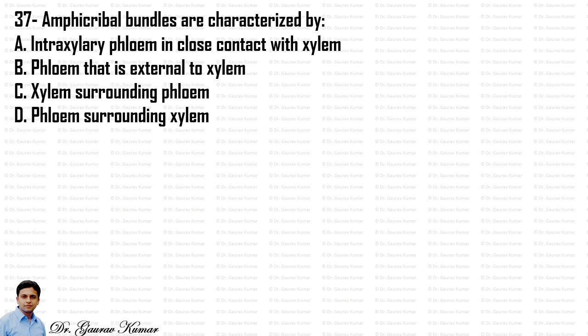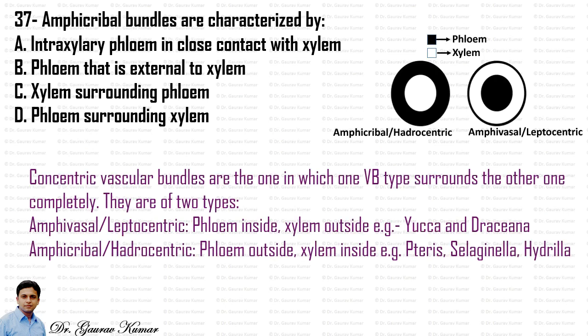Amphicribal bundles are characterized by a specific arrangement. Amphicribal, or hadrocentric, bundles and amphivasal, or leptocentric, bundles are types of concentric vascular bundles. Hadrom refers to a tube containing water and leptom refers to a tube containing food. In a concentric vascular bundle, one vascular tissue type completely surrounds the other — either phloem surrounds xylem or xylem surrounds phloem.